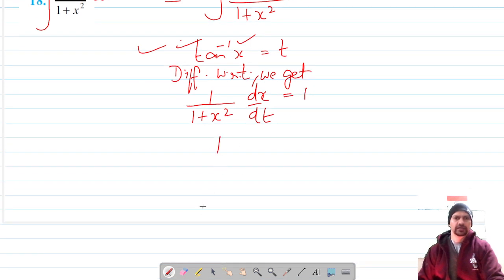And now this can be written as 1 upon 1 plus x squared into dx. That's equal to dt.